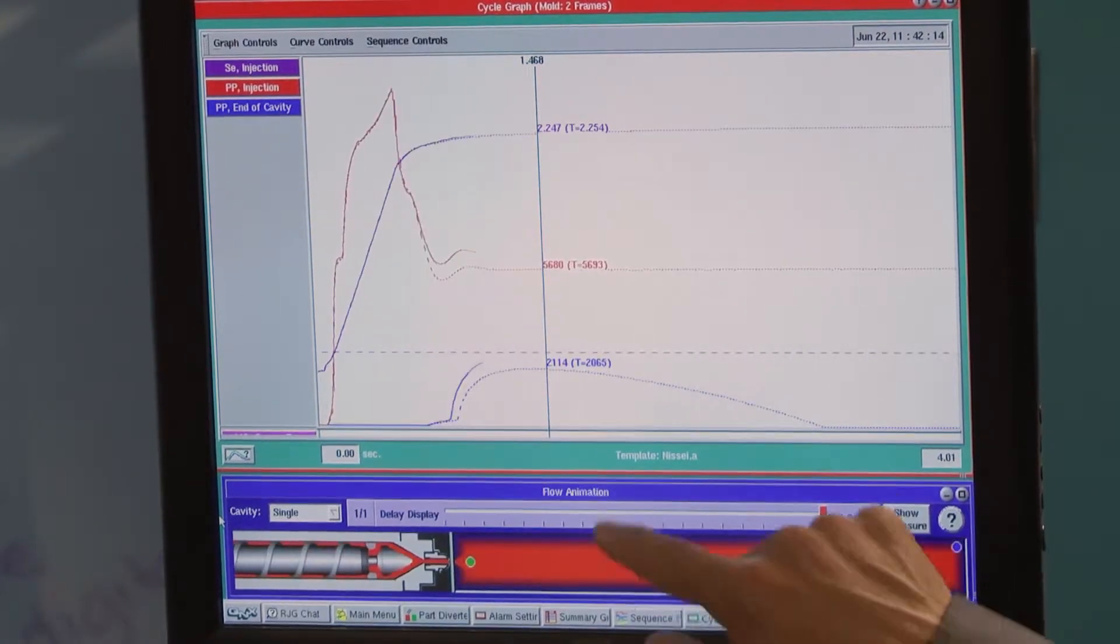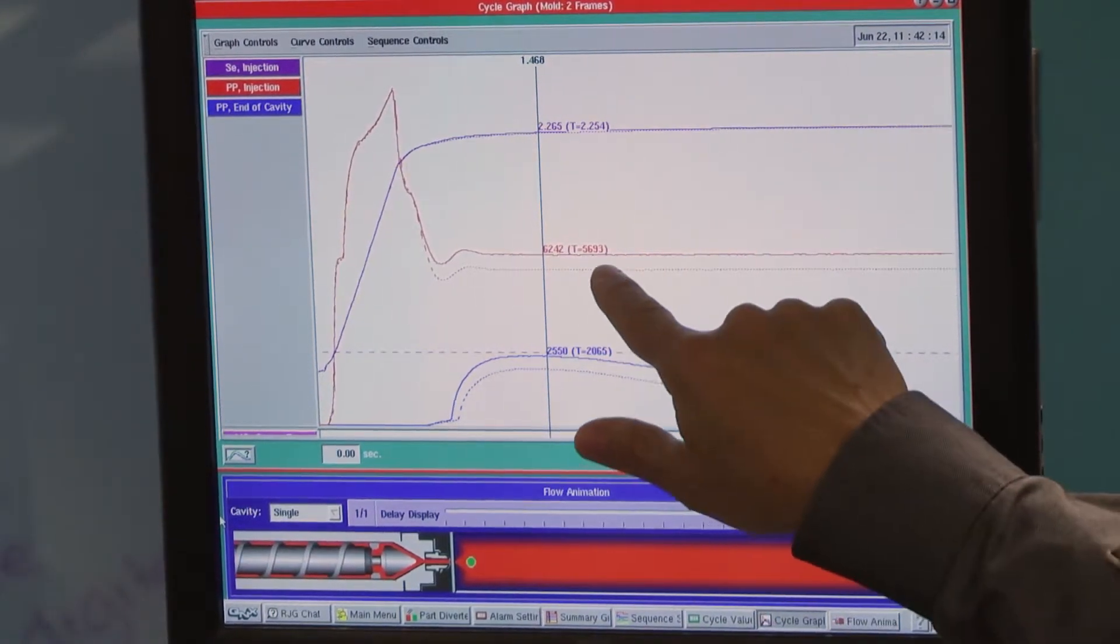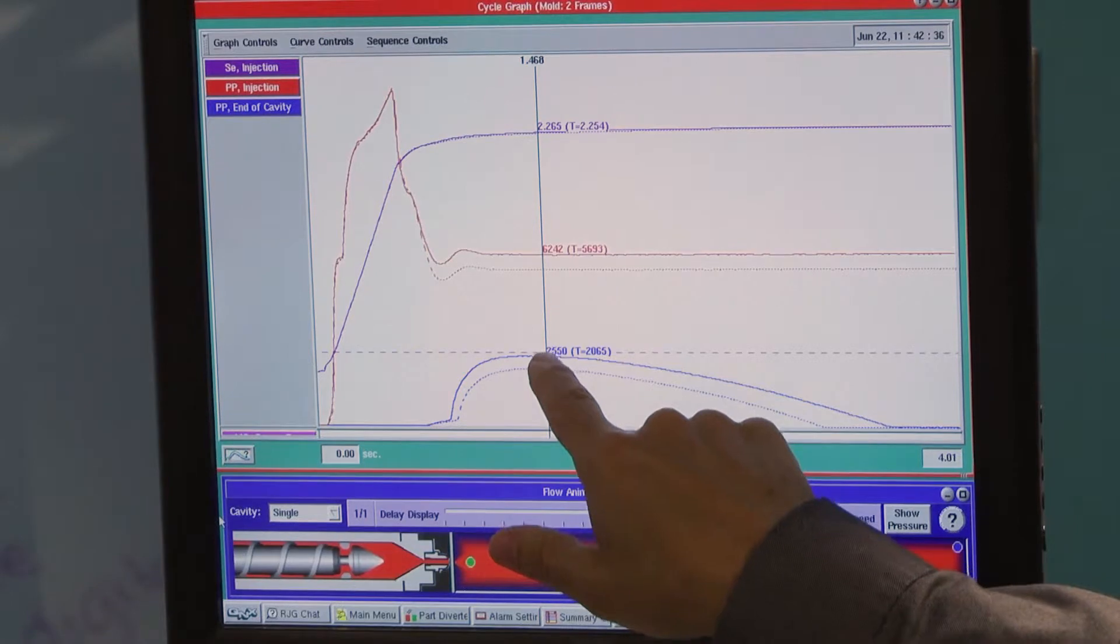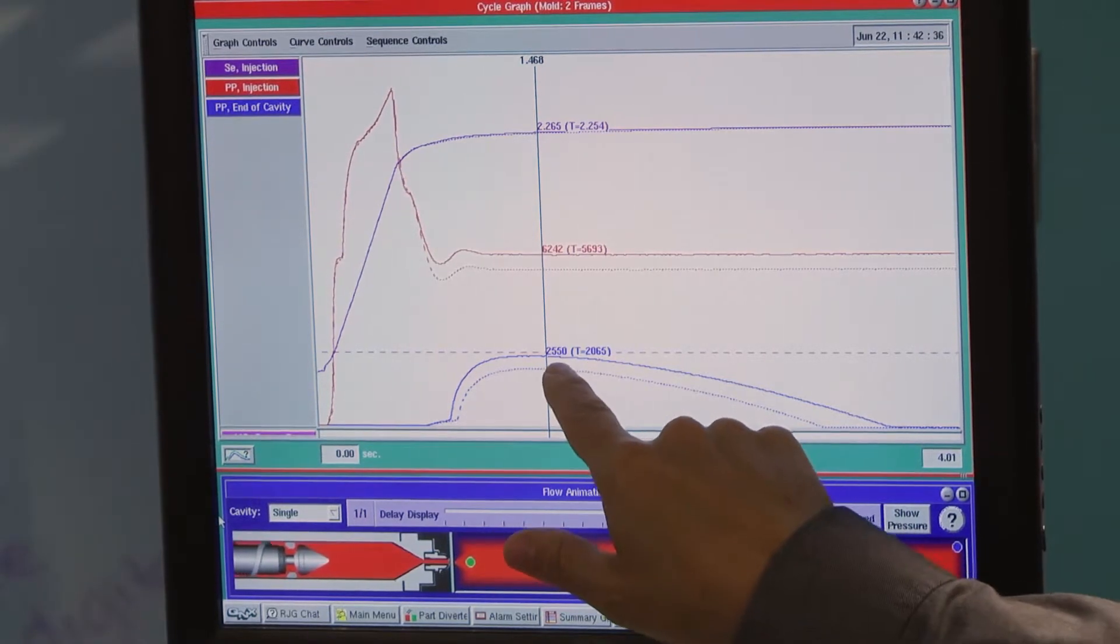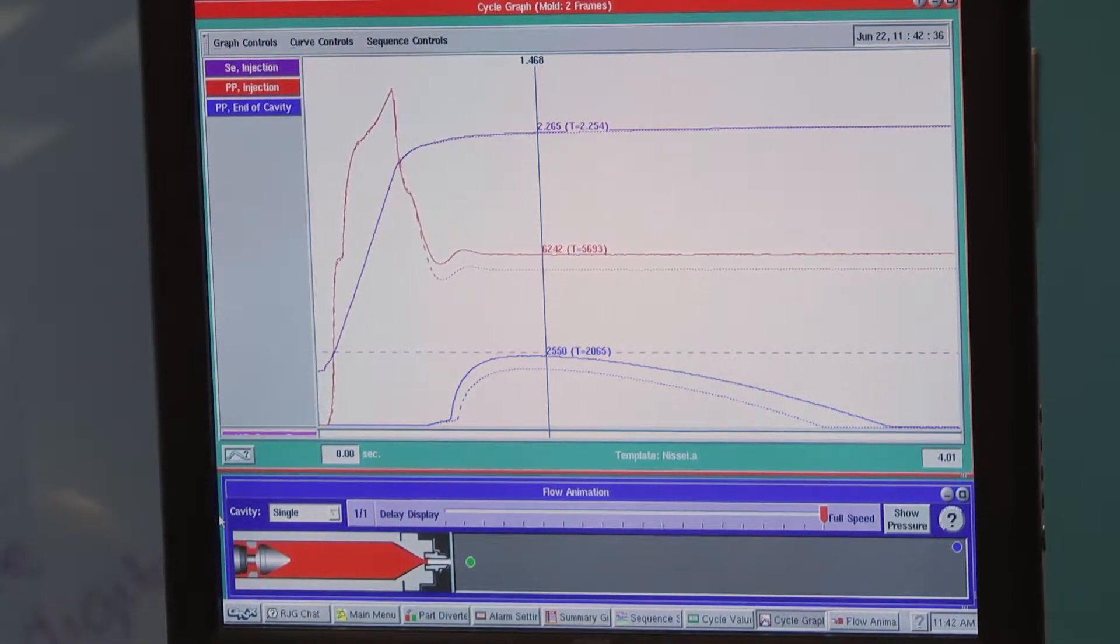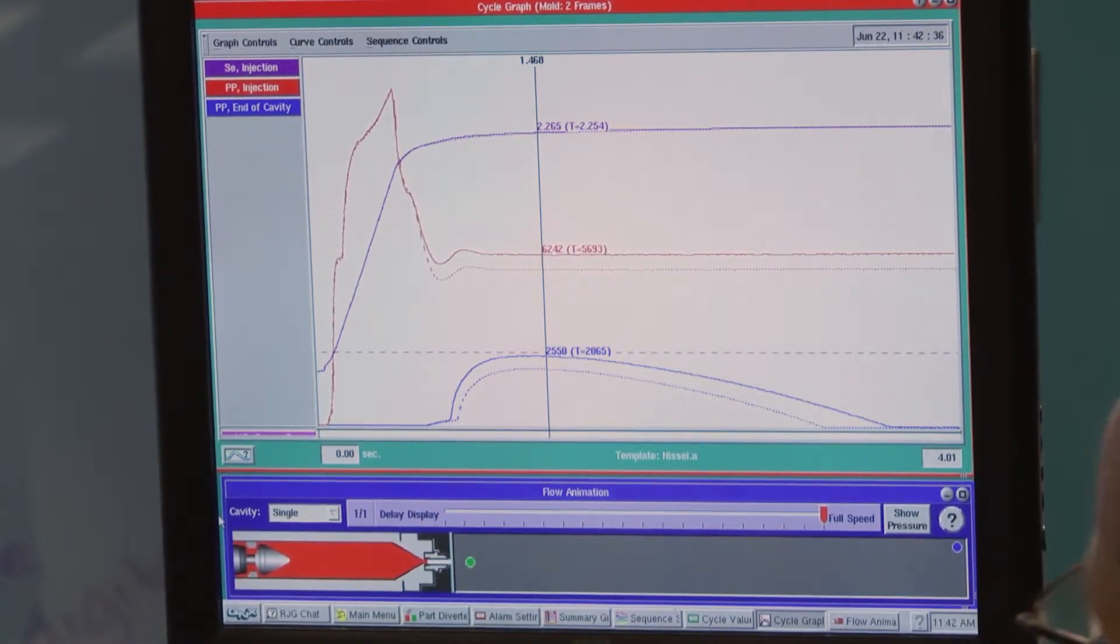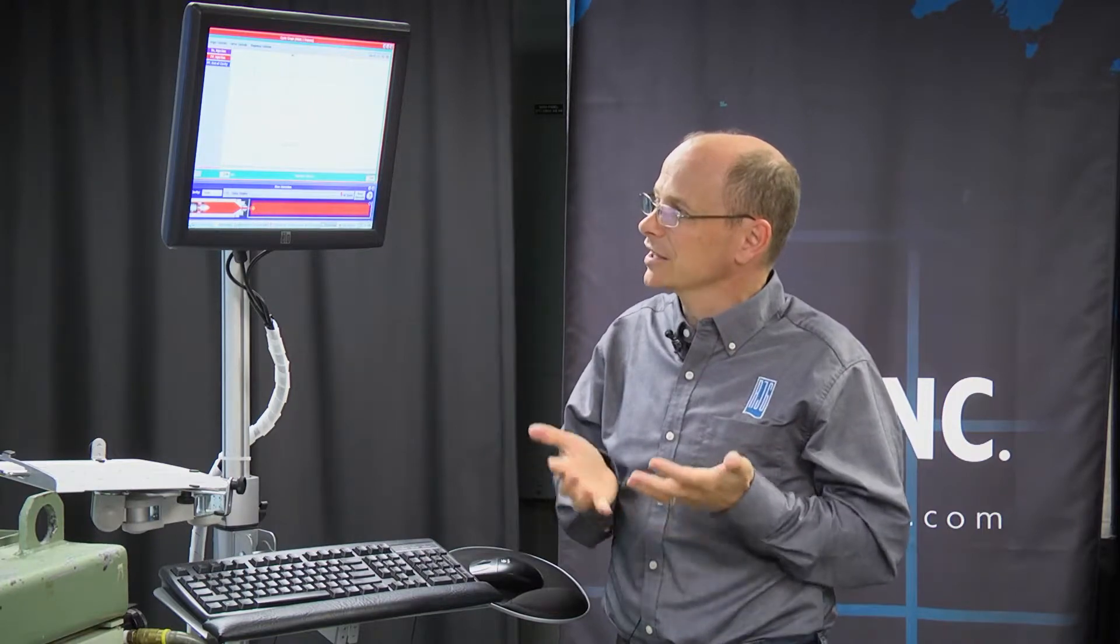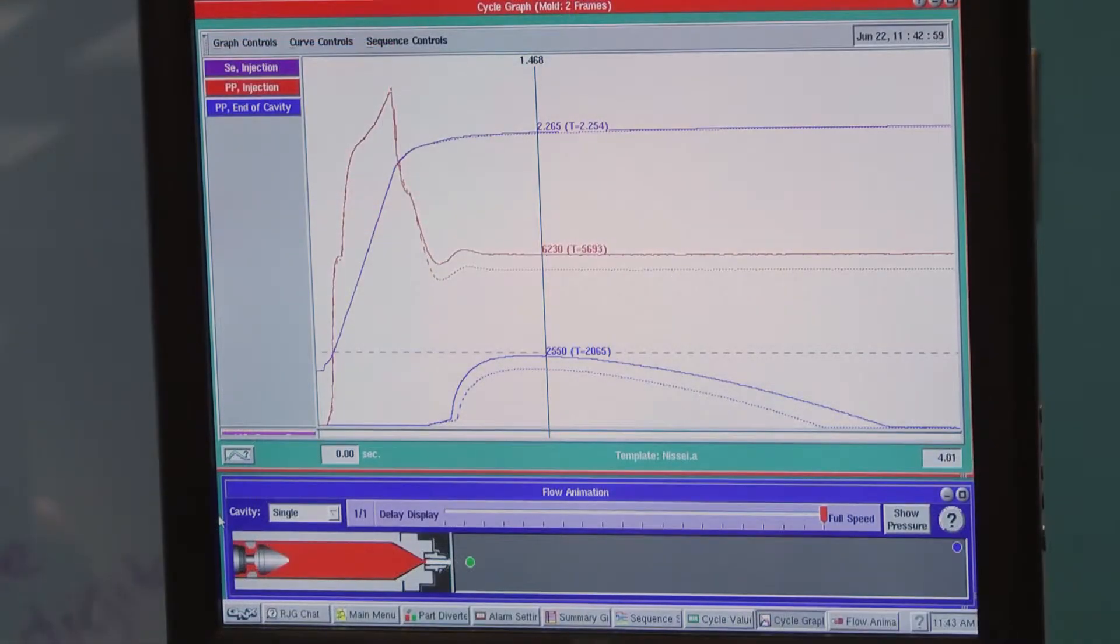Our hold pressure has gone up from 5,700 to 6,200 PSI plastic. The cavity pressure we can see has gone up from 2,000 to 2,500 PSI. Obviously, we're not matching. The question is, does this affect the quality of the part? If we have more plastic pressurized inside the cavity, do we have more plastic or less? In this case, because we've pressurized more plastic into the cavity, we've put more material into the cavity and so the part's a little bit bigger.